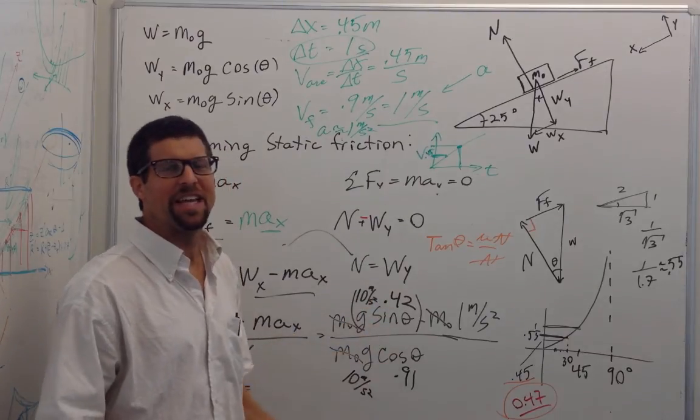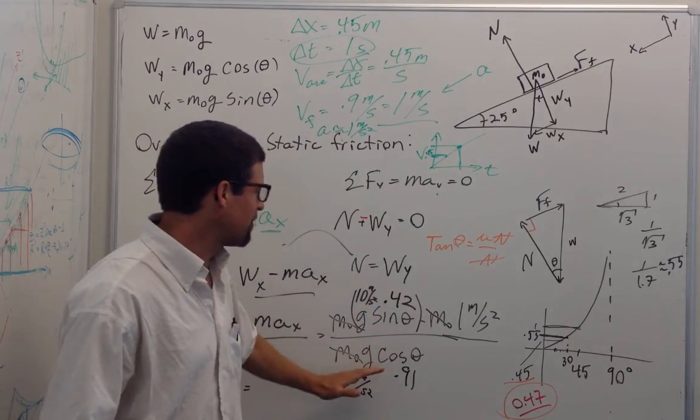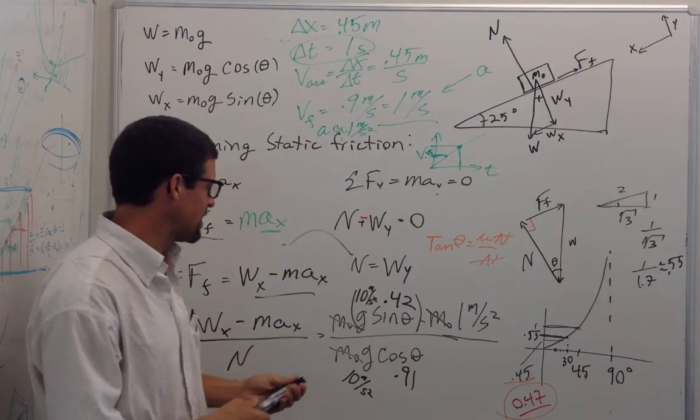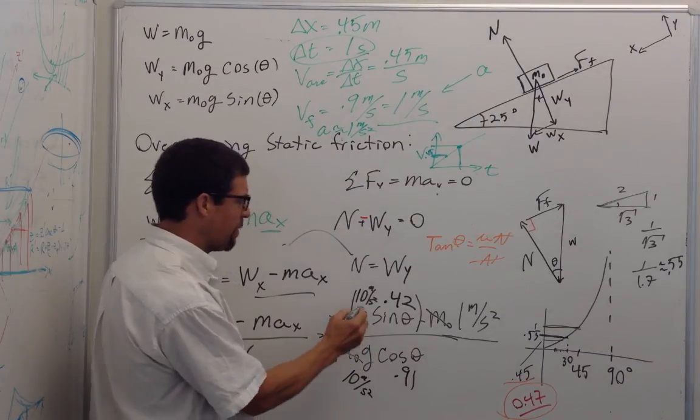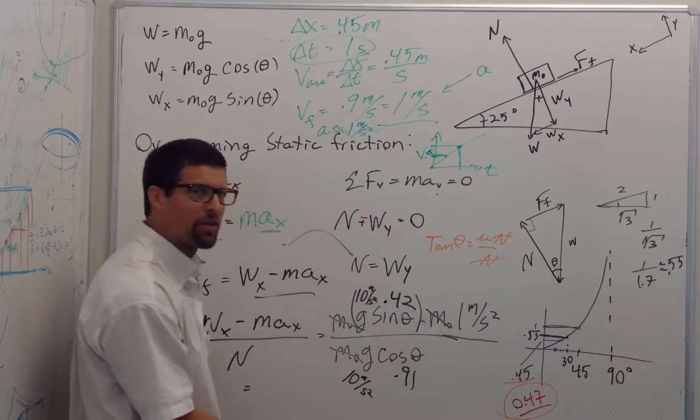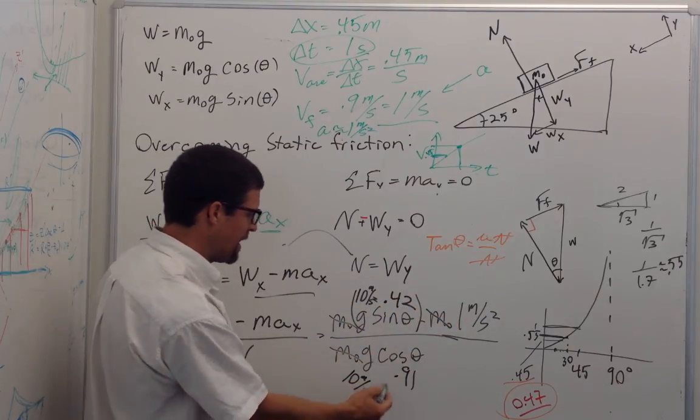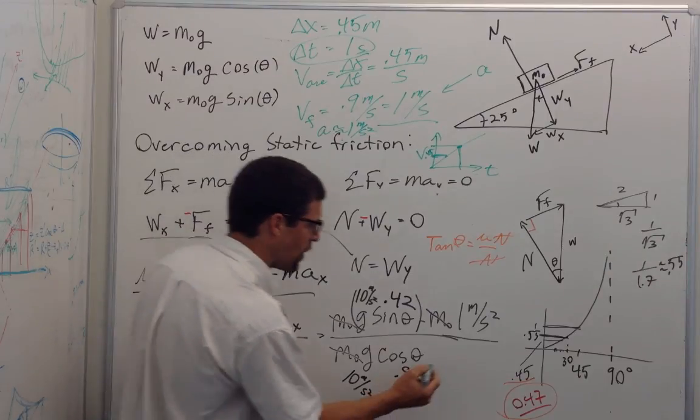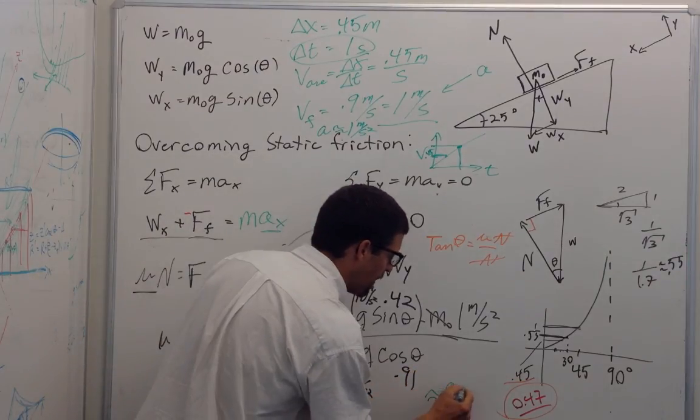Substituting these values in, yes, I wanted the extra precision, so I used the calculator, guilty as charged. And this winds up being 4.2 meters per second squared minus 1, 3.2 meters per second squared divided by 9.1 meters per second squared is about 0.36, significantly less than 0.47.